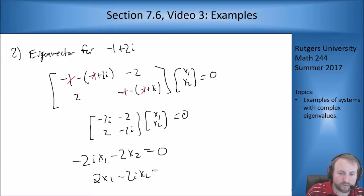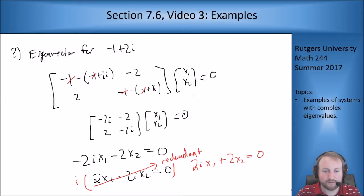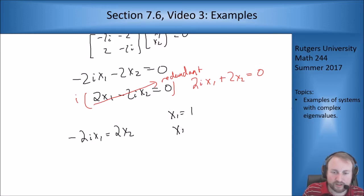Which is negative 2i x1 plus negative 2 x2 equals 0. As I mentioned in the last video, if I multiply this bottom equation by i, I get 2i x1 plus 2 x2 equals 0. Which is the negative of the first equation. So this guy is again redundant. Even though it may not look like it at first because it's complex valued, it's still a redundant equation when we're allowed to use complex numbers to multiply things by. So this here tells me that minus 2i x1 equals 2 x2. Divide either side.